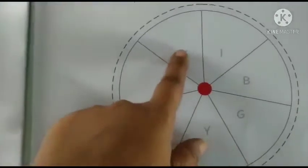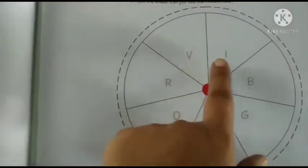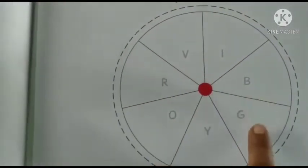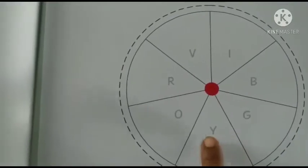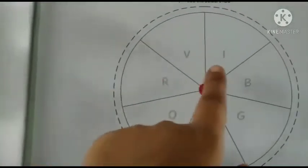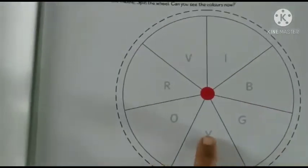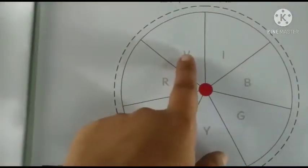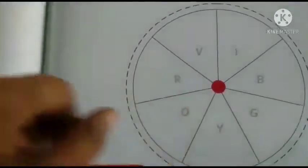To yaha pere kya karna hai? Yaha rainbow ke colors hai. Violet, indigo, blue, green, yellow, orange and red. To yaha aapko colors karna hai. Yaha pere jho names diya hai, vohi color aapko karna hai. Thik hai?